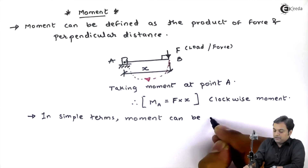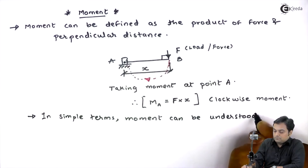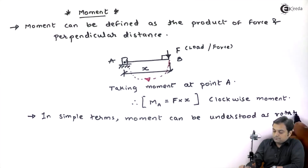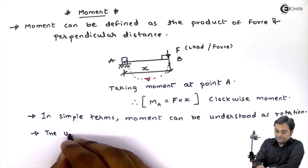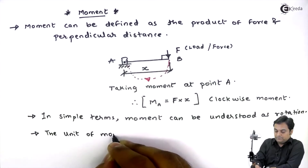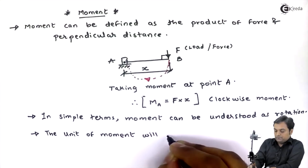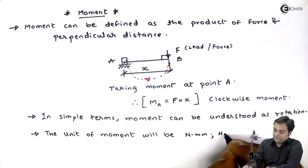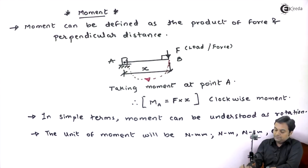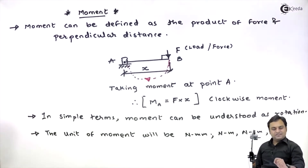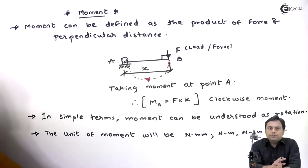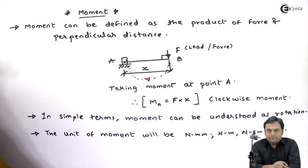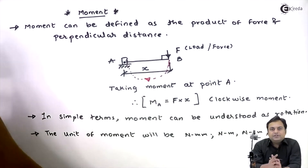In simple terms, moment can be understood as rotation. The unit of moment will be Newton-millimeter, Newton-centimeter, or Newton-meter. Force is in Newtons or kilonewtons, and distance can be taken in mm, centimeter, or meter, so the unit of moment becomes Newton·mm, Newton·cm, or Newton·m.